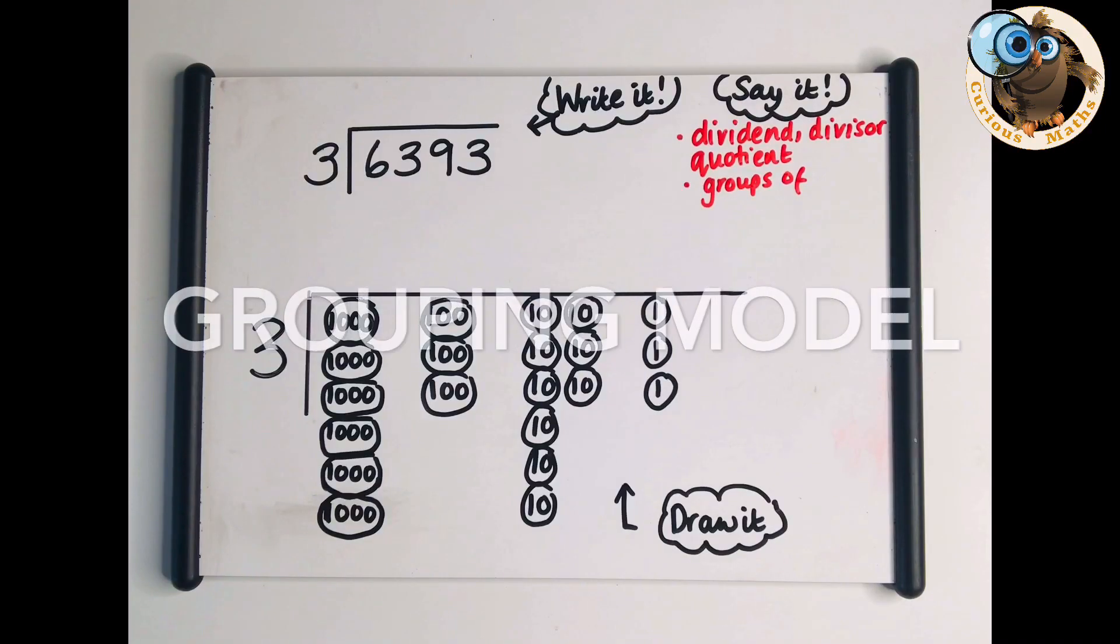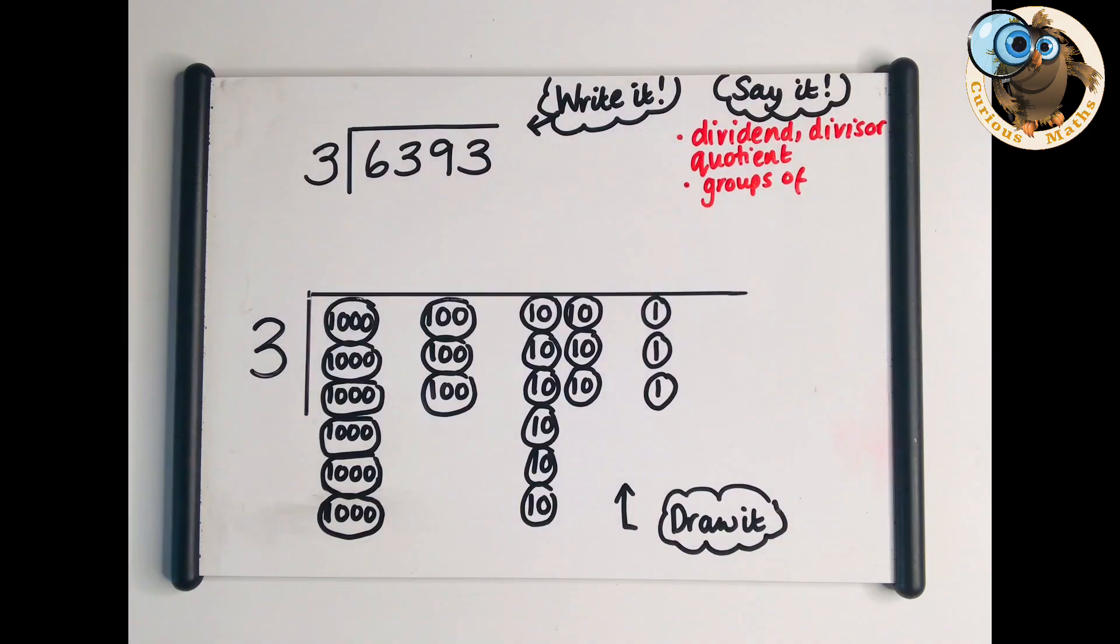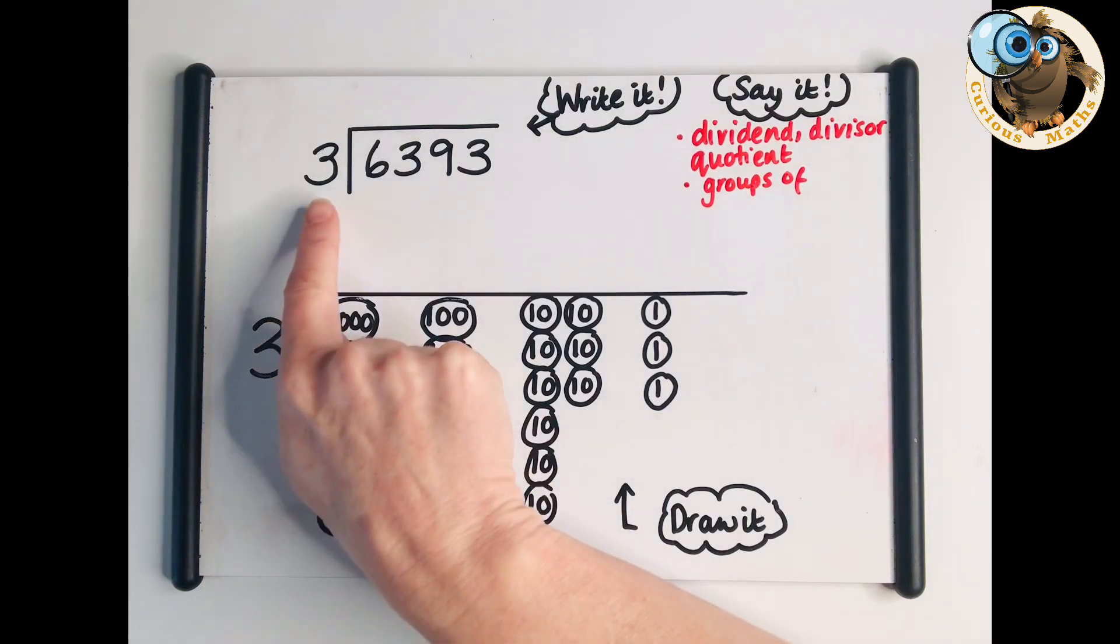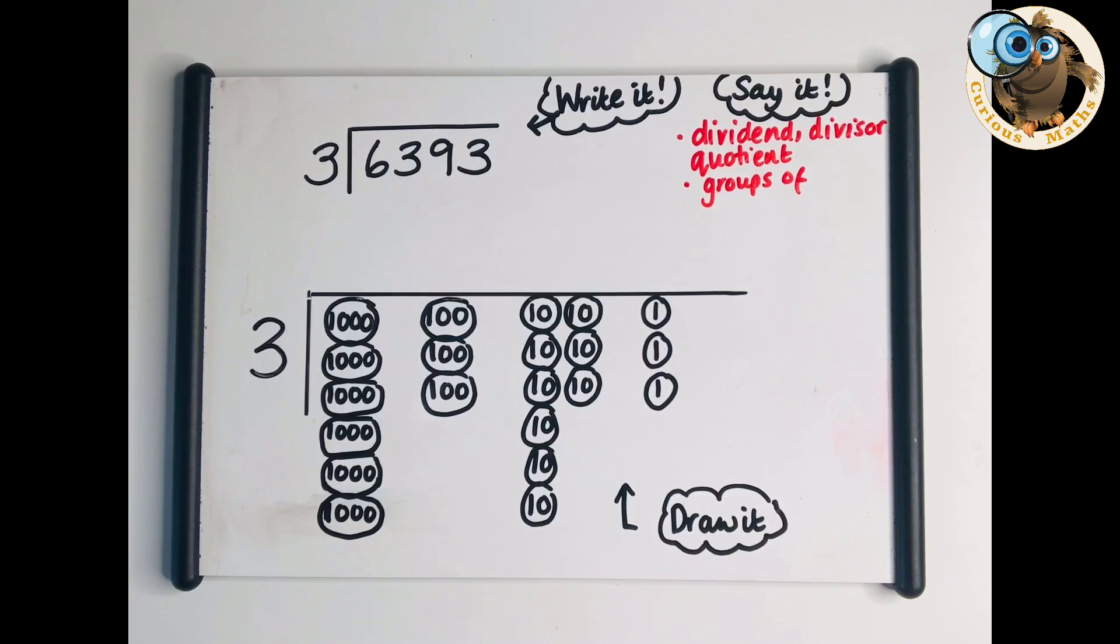This is the kind of question children will do in Year 5 because they have to divide a four digit number by a single digit divisor. When we get to these numbers, hopefully children will have had lots of build it, draw it, write it, say it using the sharing model and it should have benefited their understanding. But when numbers get this big and the divisor starts getting bigger, it gets increasingly difficult to share the numbers and have enough space.